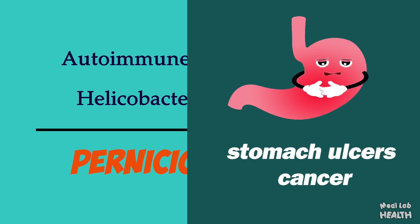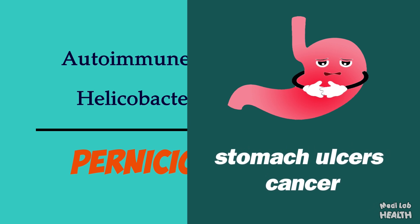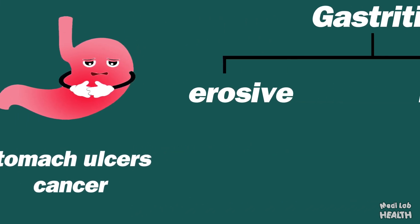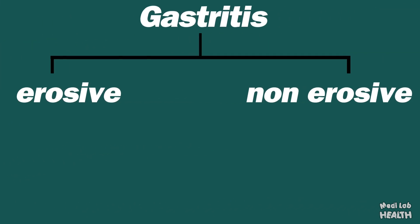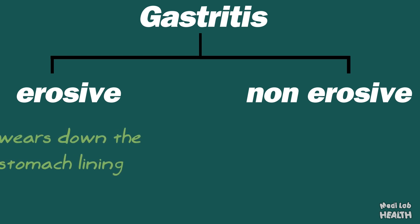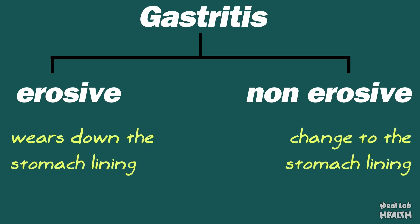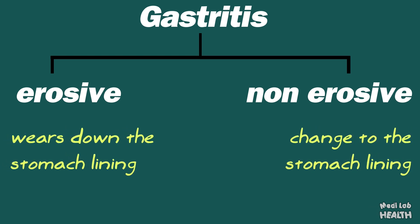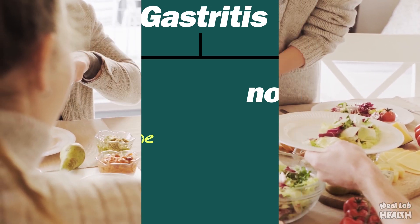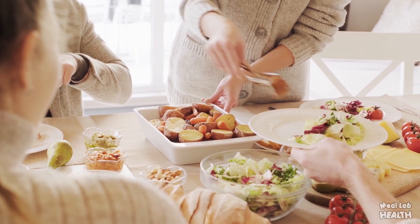The two main types of gastritis are erosive and non-erosive. Erosive gastritis wears down the stomach lining, while non-erosive gastritis causes changes to the stomach lining. Smokers and people who regularly use pain medications are at risk of gastritis.